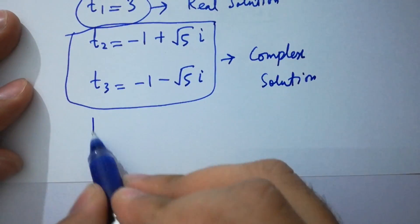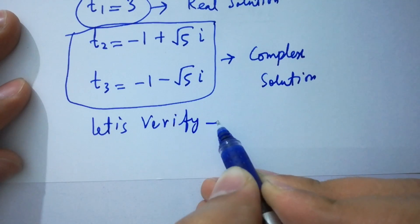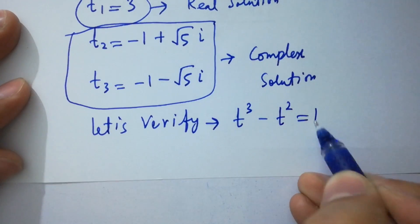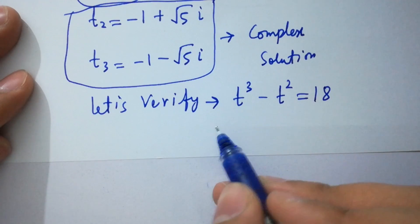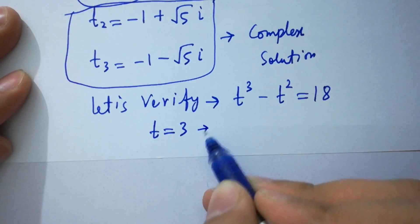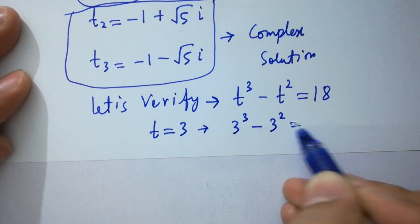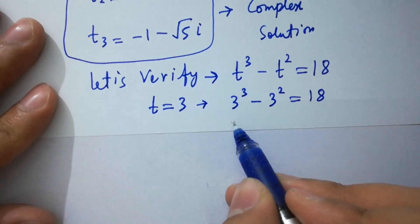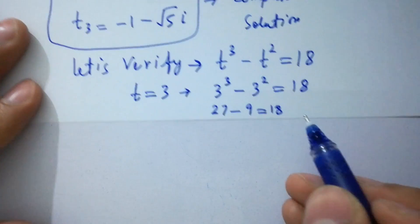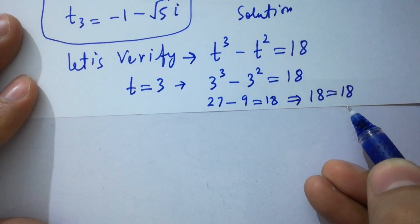Now let's verify. Putting the value t equal to 3 into t cube minus t square equal to 18, we have 3 cube minus 3 square equal to 18. That is 27 minus 9 equal to 18, which gives 18 equal to 18. Left hand side equals right hand side. Verified.